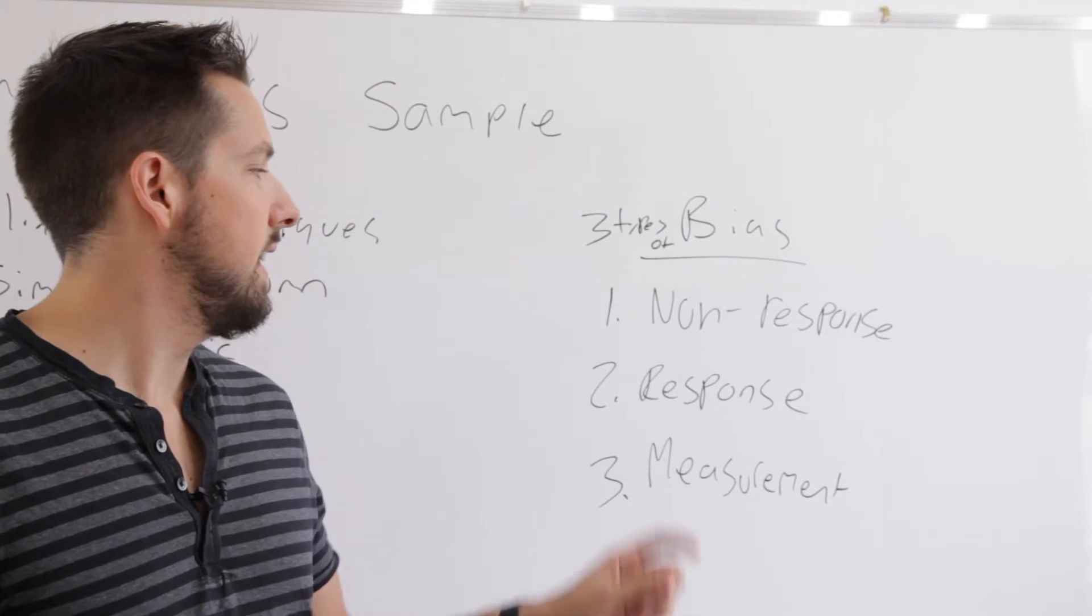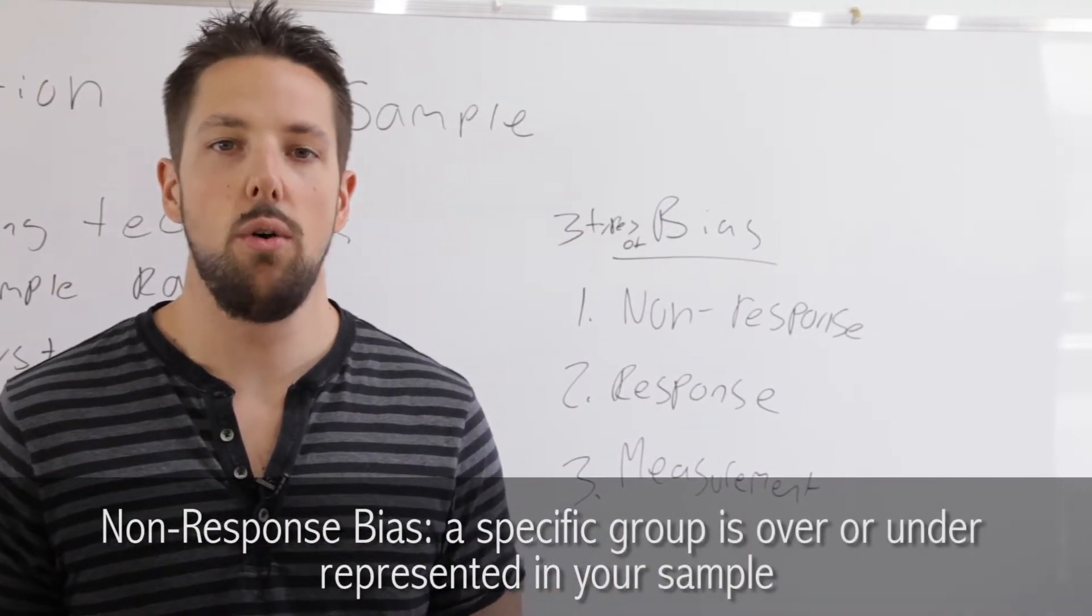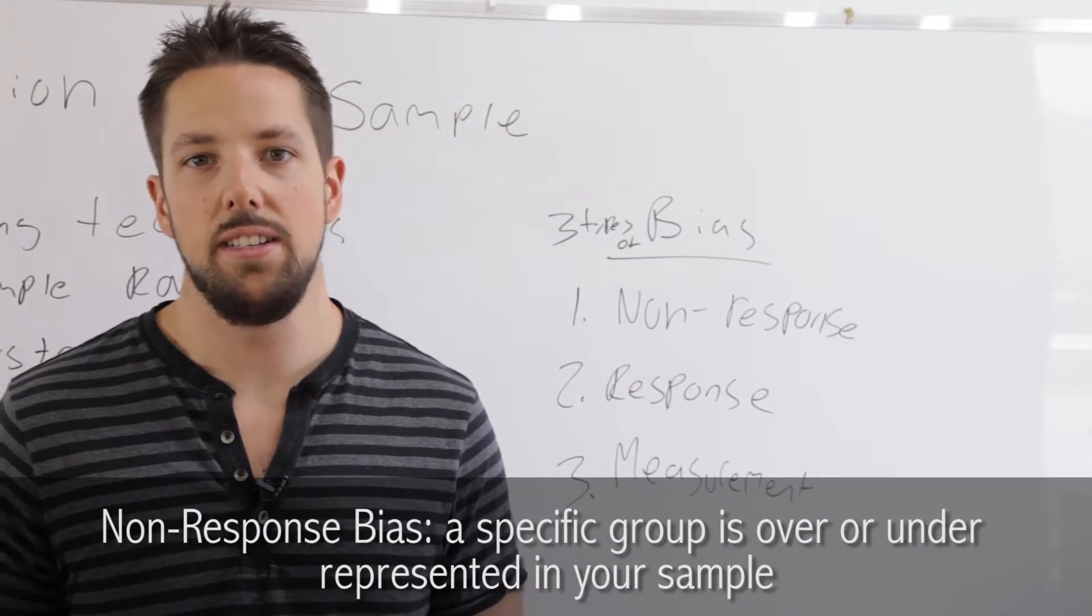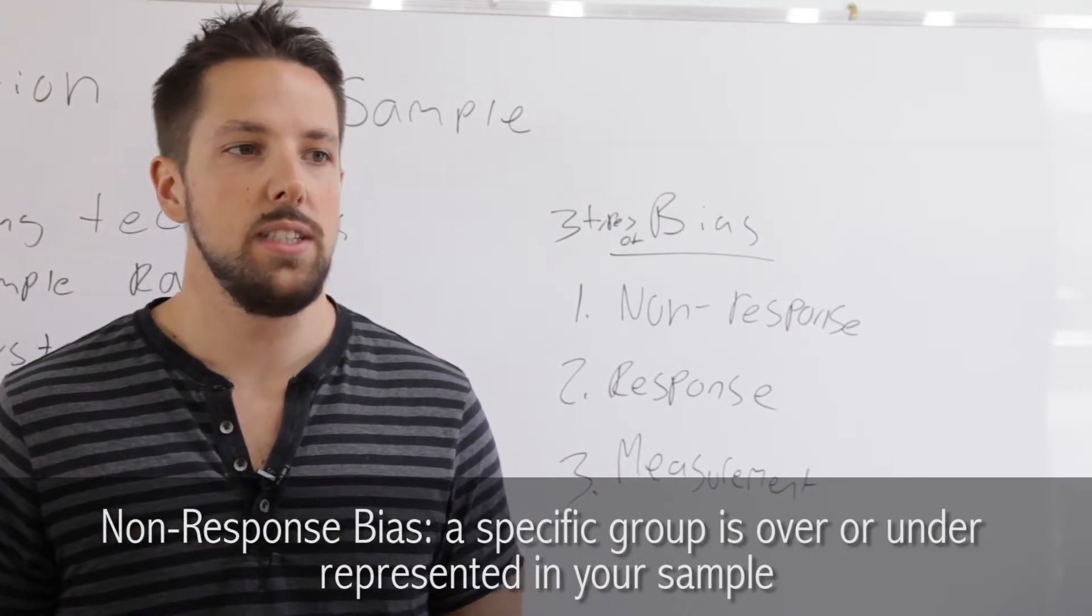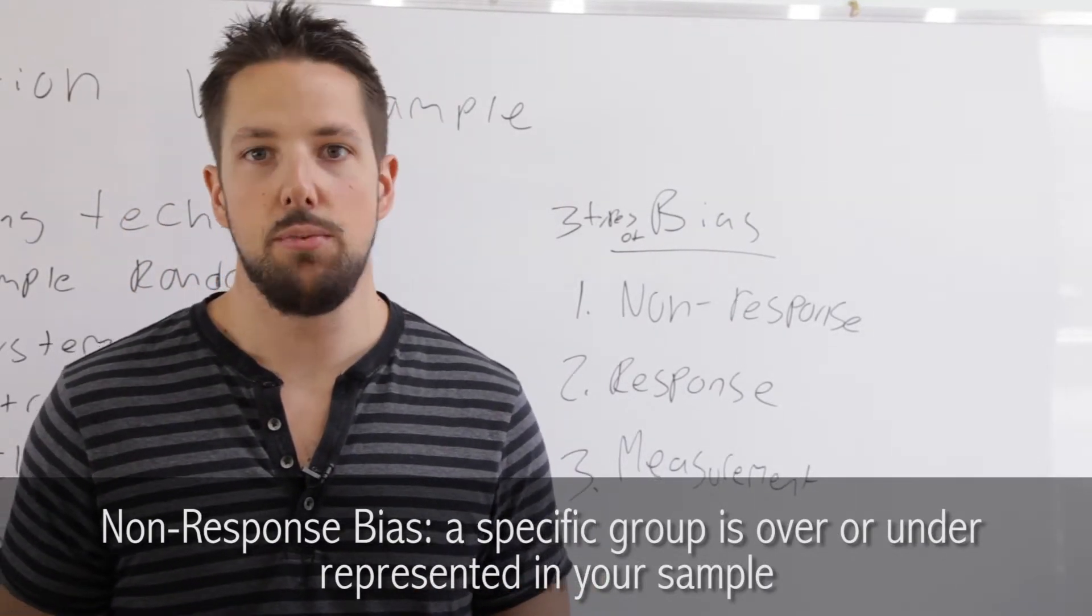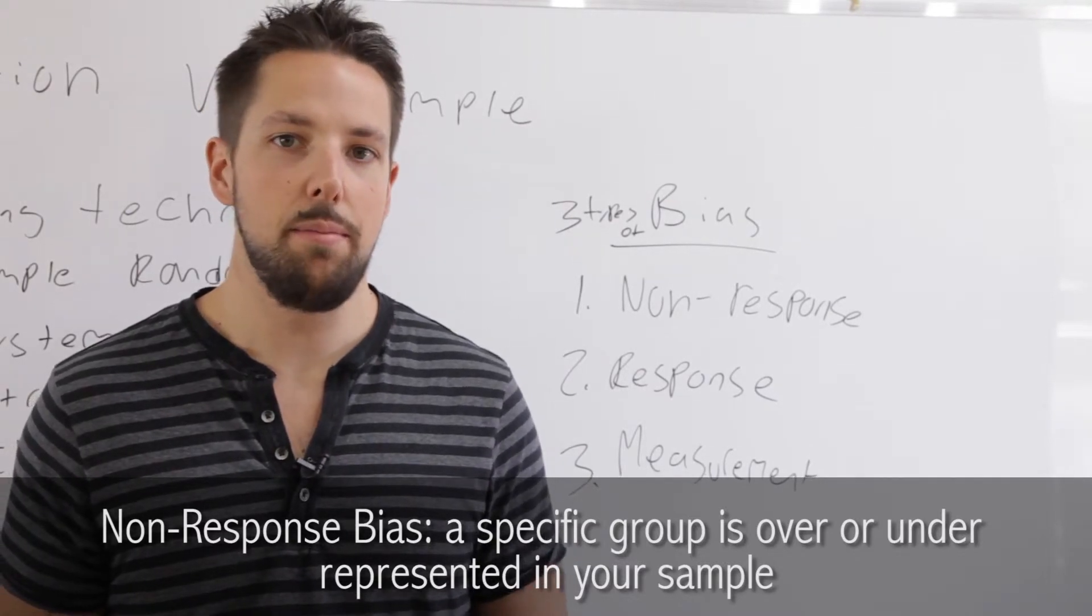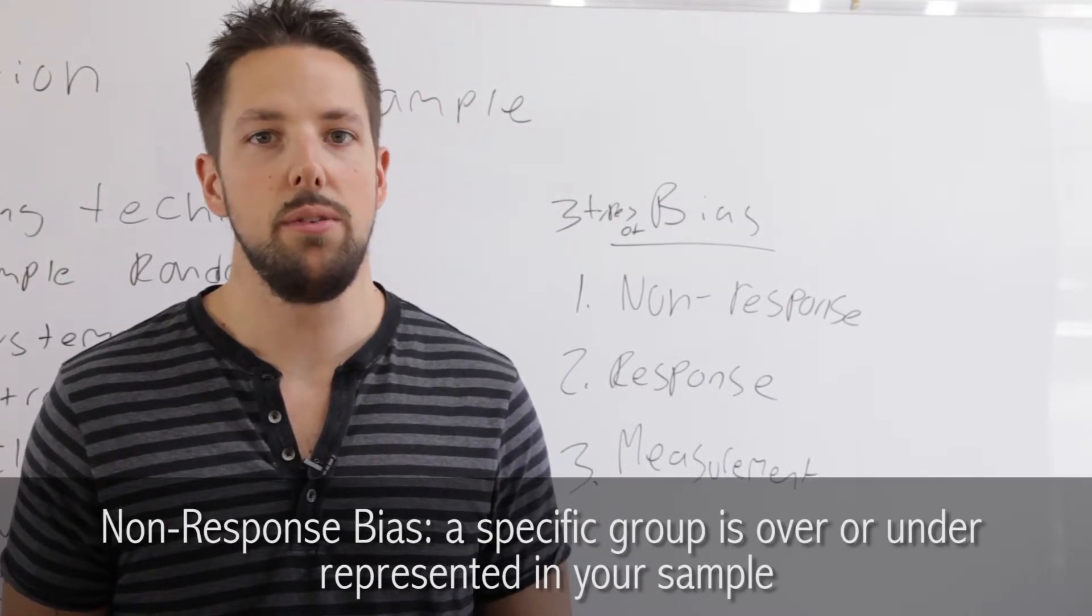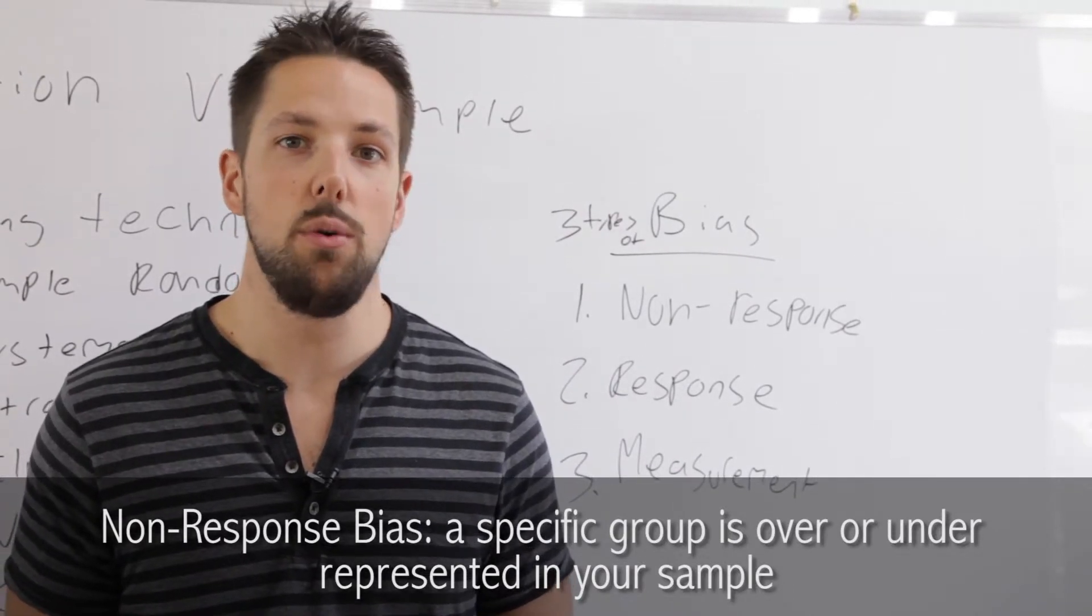The first one is non-response bias. That's when a particular group is over or underrepresented in your sample. Say you go to a football game and you're composing a study about whether or not increased funding should be given to sports in your school. If you go to a football game, you're more likely to find people who like sports and would agree with you. So your sample is biased in that it'll under-represent people who don't like football.